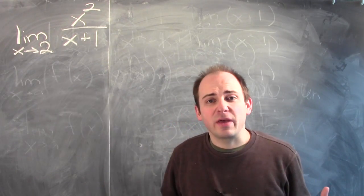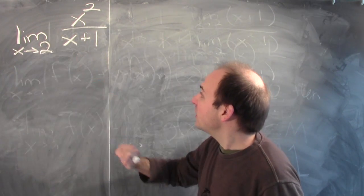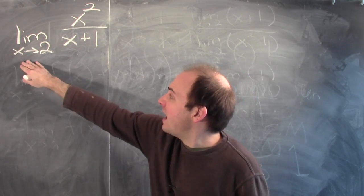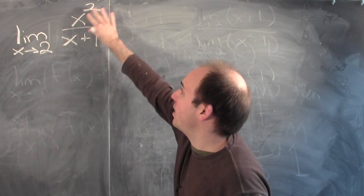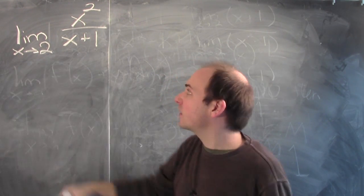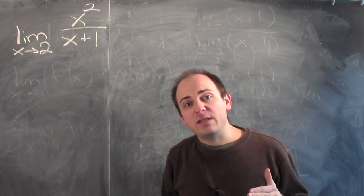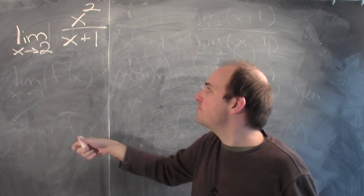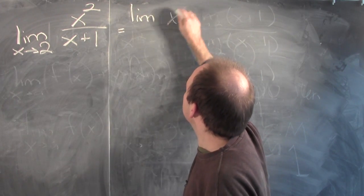Let's do something with our newfound knowledge about limits of quotients. Here's a limit problem: I want to know the limit of x squared over x plus 1 as x approaches 2. I want to promise you that x squared over x plus 1 is close to something whenever x is close enough to 2. This is a limit of a quotient, and the limit of the quotient is the quotient of the limits, provided the limit of the denominator is not 0 — and in this case it's not.